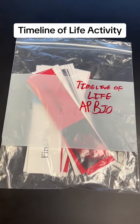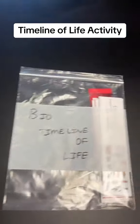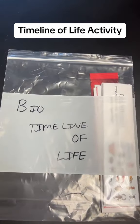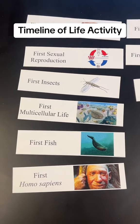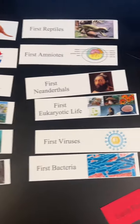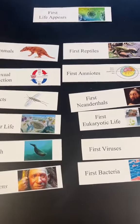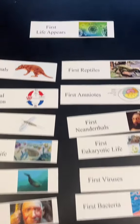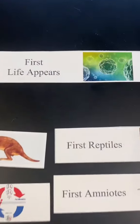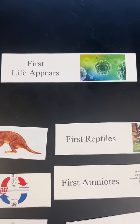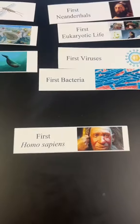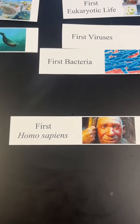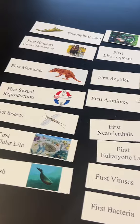This year I have two different versions: an AP Bio and a regular biology version. In both versions I have timeline cards for different events in life history. Students have to organize the cards from first to last — first life appearing will be the first card and the last being our species evolving.